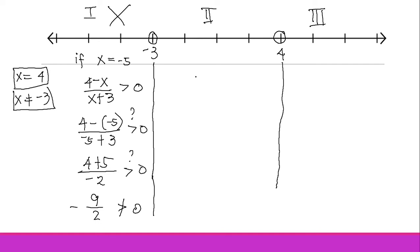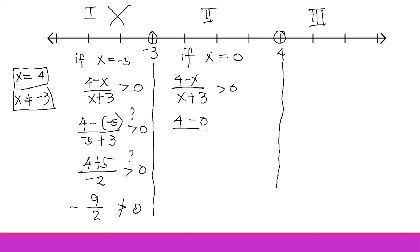Moving to Region 2, which contains values between negative 3 and 4, let's choose x equals 0. Plugging into (4 minus x) over (x plus 3) greater than zero: we get (4 minus 0) over (0 plus 3), which is 4 over 3. Both are positive, so this is greater than zero — it's true. Region 2 is part of our solution.